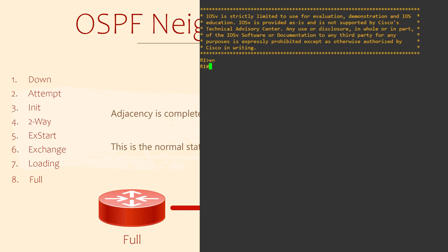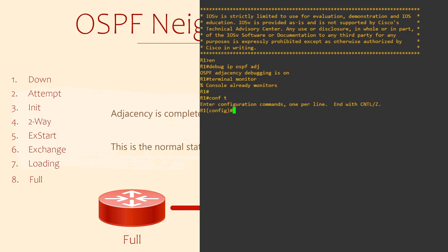Let's take a look at a router going through these states. For this, I'm going to use the debug ip ospf adjacencies command. Don't forget — if you're connected with Telnet or SSH, you will need the terminal monitor command to see the logs. This is not required when on the console. Now I'm going to configure OSPF on this router. The router it connects to is already configured. Router ospf 10 starts the process, and the network command enables OSPF on an interface.